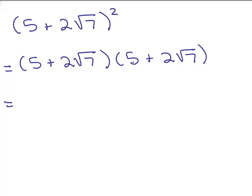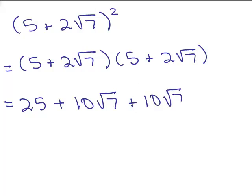So we have 5 times 5 which is 25 — that's the first. Outer: 5 times 2 square roots of 7 gives 10 square root of 7. Inner: 2 square roots of 7 times 5 again gives 10 square root of 7. Anytime you're squaring a binomial, these two middle terms will be exactly the same. Last term: 2 square roots of 7 times 2 square roots of 7 — 2 times 2 is 4 and square root of 7 times square root of 7 is 7.